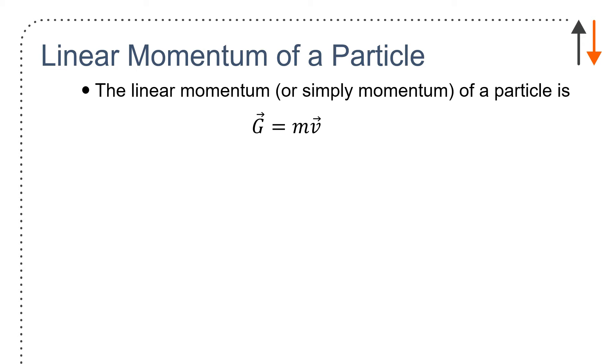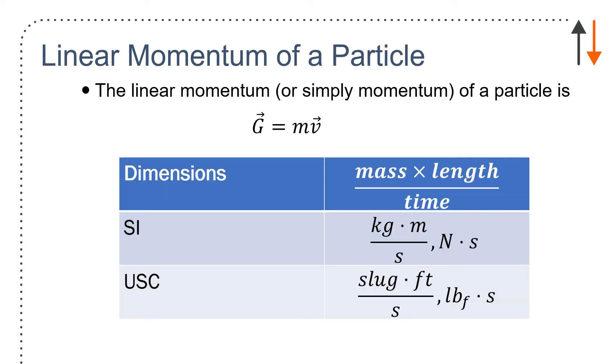So using the notation in the book, which I will regret in a few slides, the linear momentum, or simply momentum, of a particle is G equals mv. It has dimensions of mass times length over time, SI units kilogram meter per second or newton seconds, US customary units slug feet per second, and pound force seconds.